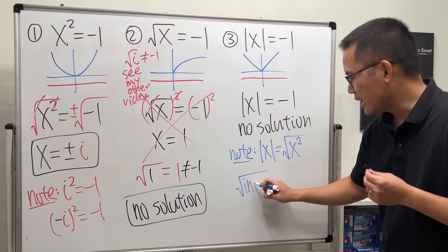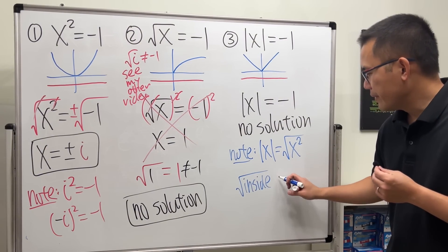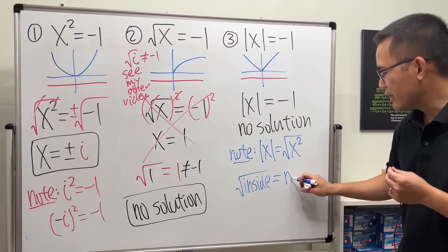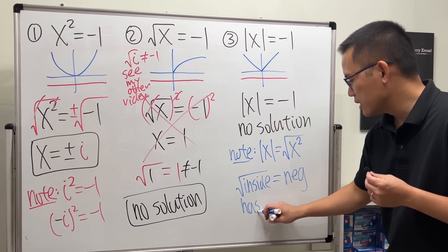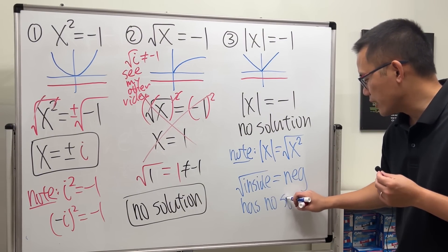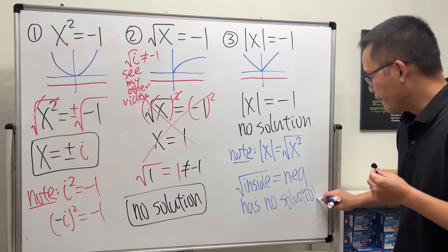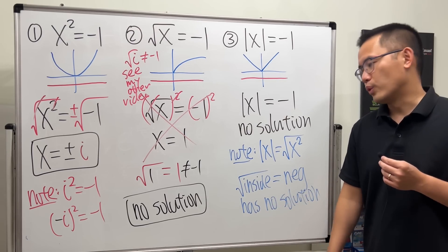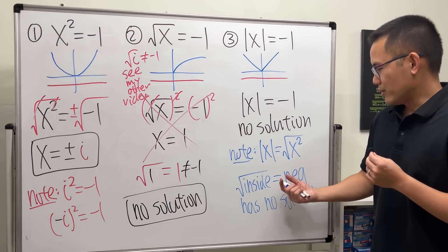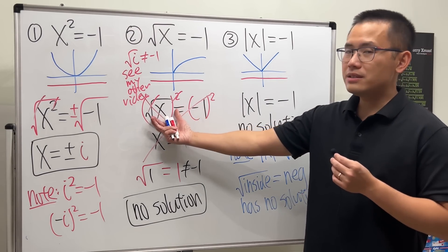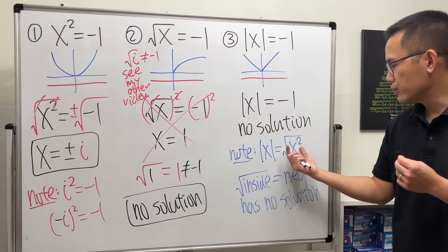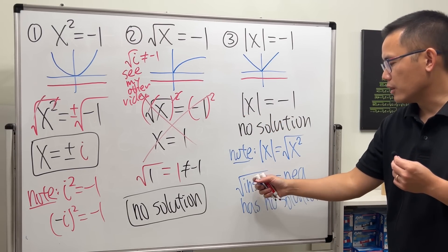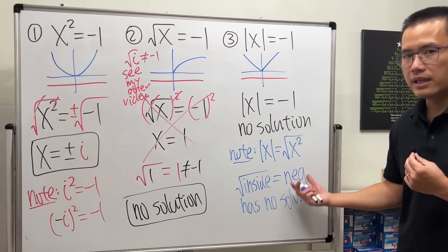And another note to tell you is: square root of anything inside, right, if the output is equal to a negative number, this equation has no solution at all, not even in the complex world. So this applies to this earlier - you can also argue that this is equal to that. Square root of anything cannot give you a negative result. Yes, no solution.